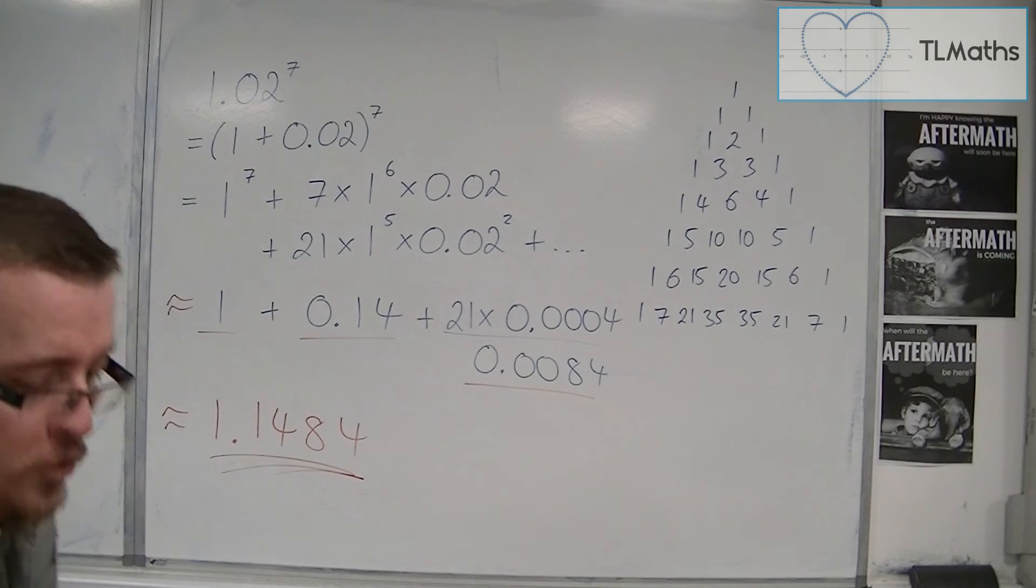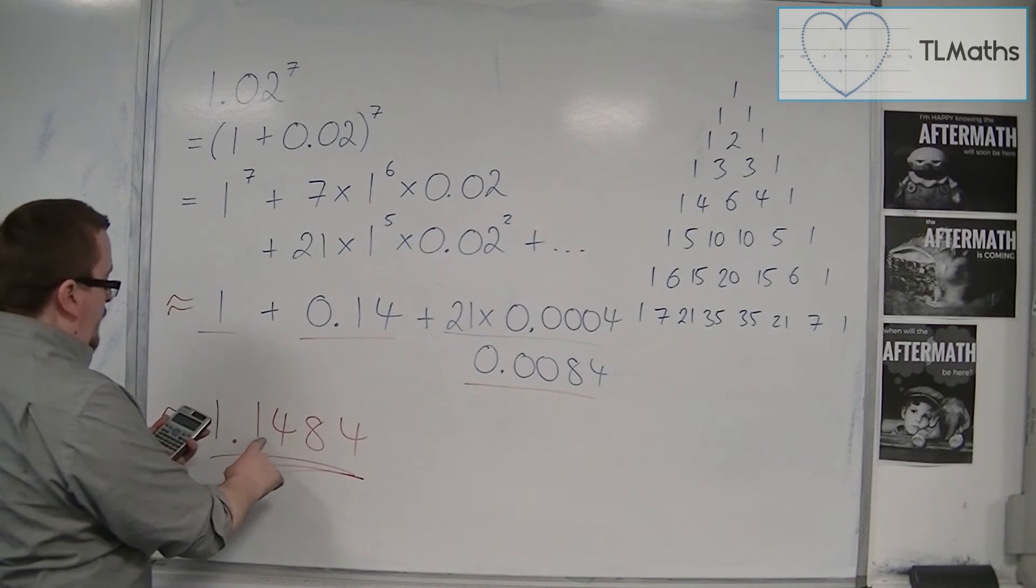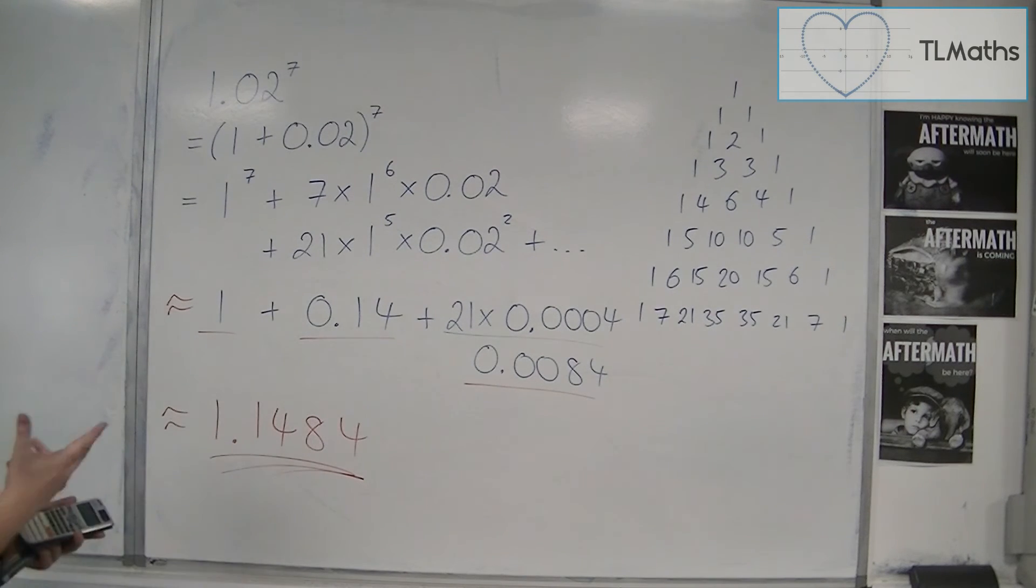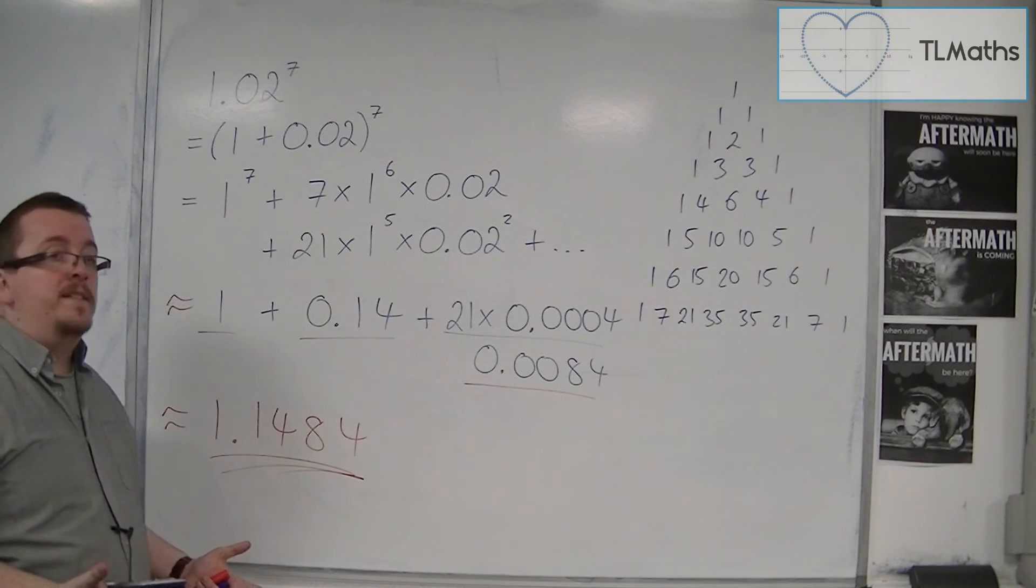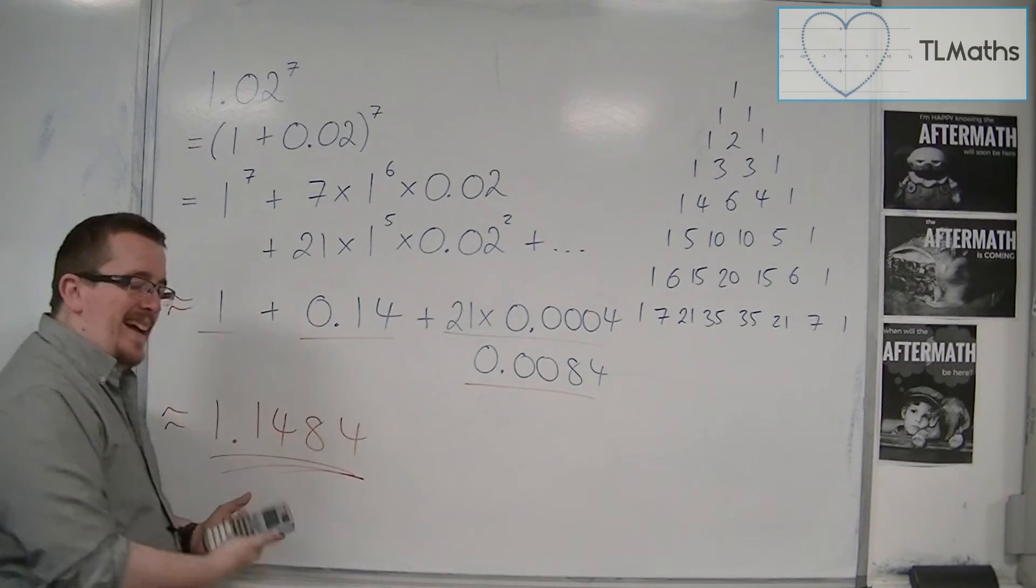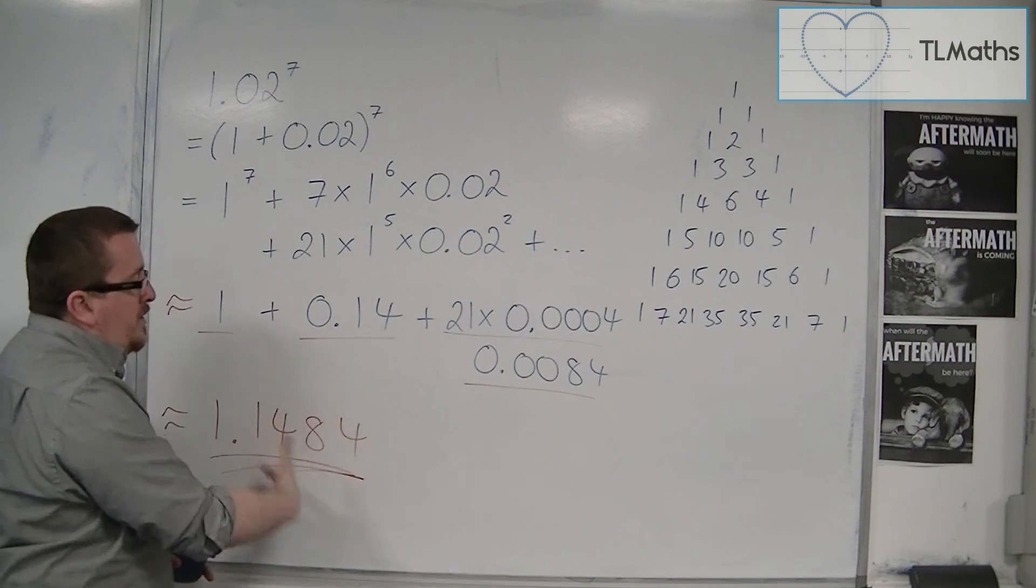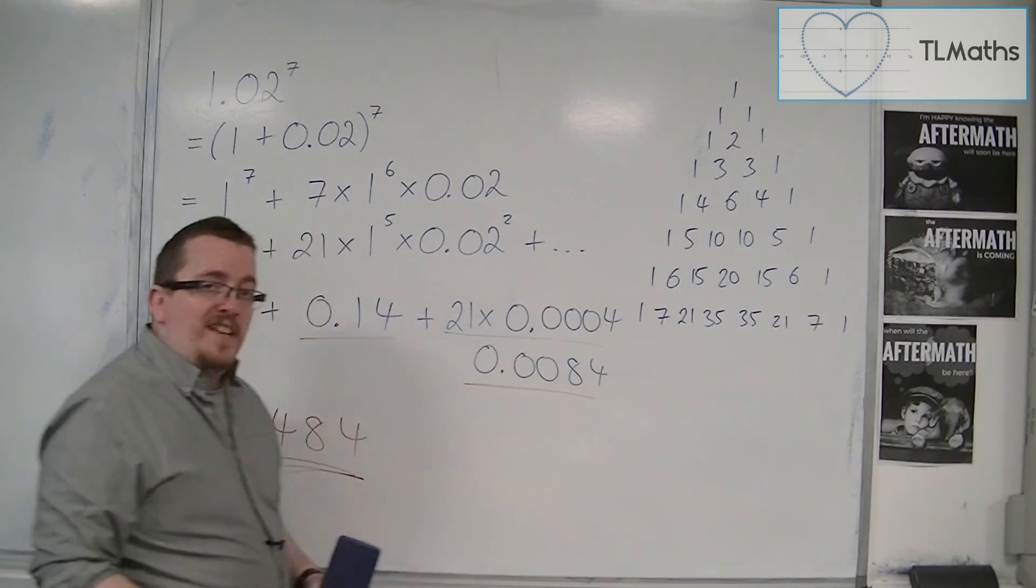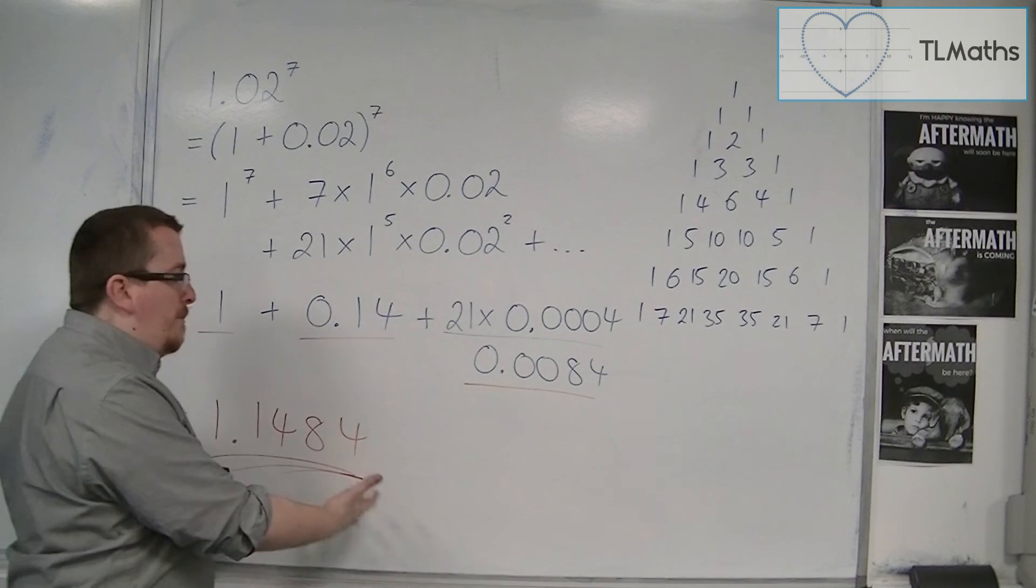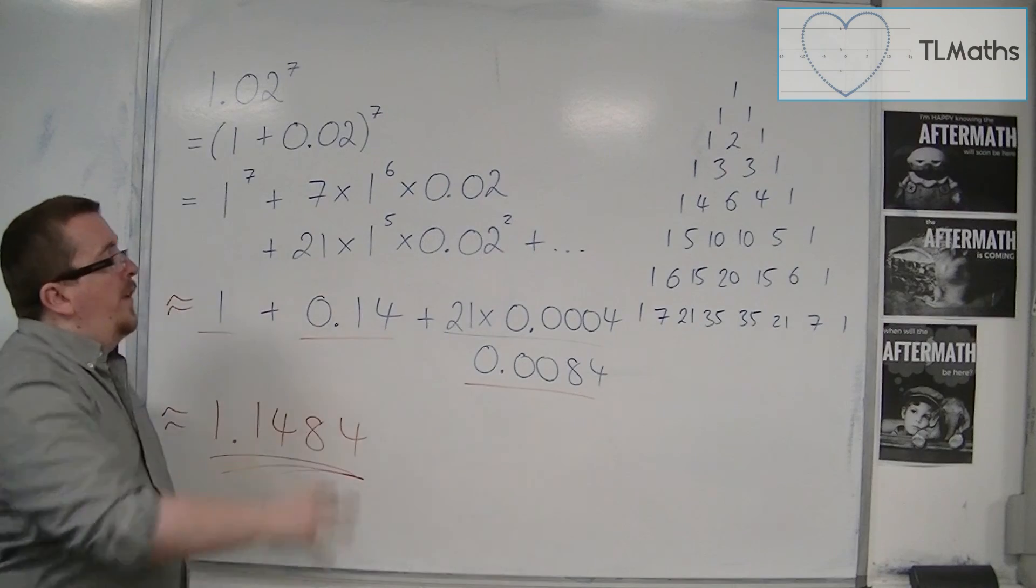So if we try it on our calculator, 1.02 to the power of 7, you get 1.148685668. So this is reasonably good. It's not perfect, but if I had fully expanded it, I would have got exactly the right answer. Because at each term you're adding on a little bit more, this isn't going to be perfect until you've added all of them together. Because I've only added on the first three terms. But if I'd added on a few more terms, this would have been even more accurate. And that's how we can approximate these things using the binomial expansion.